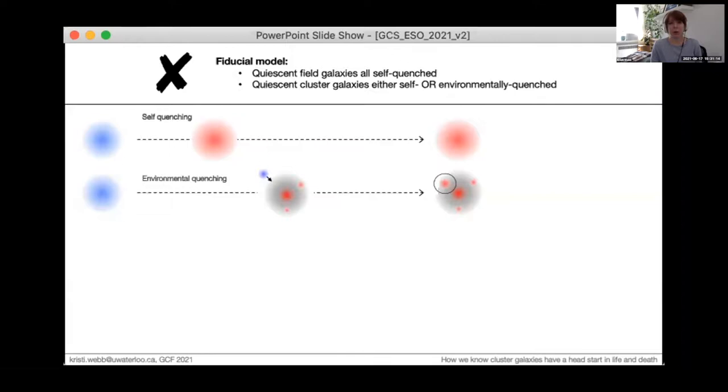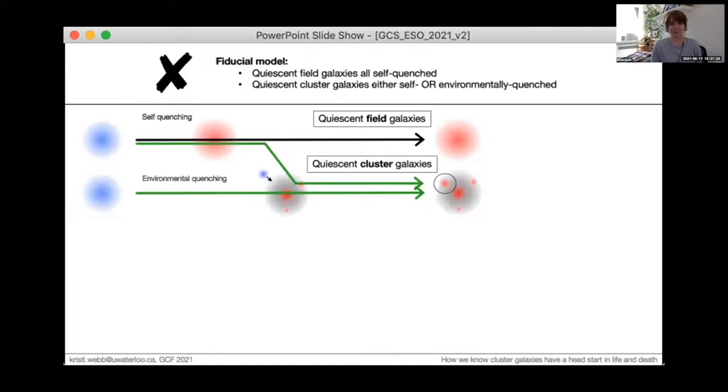Now consider the field and cluster-quenched populations. The field galaxies only quench by the self-quenching channel, while cluster galaxies can quench by either channel they just have to end up in a cluster. While this simple picture can explain the higher quenched fractions in clusters, particularly at lower stellar masses, where here I show a version of the quenched fractions measured by Hirschman et al. around a redshift of zero.